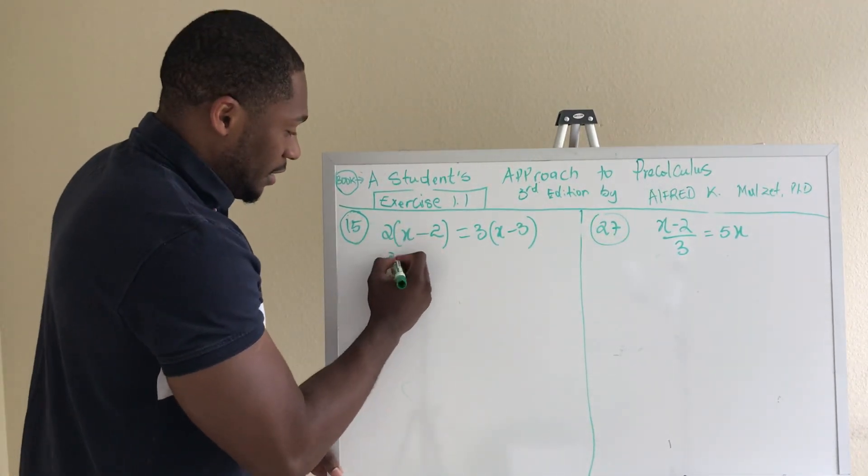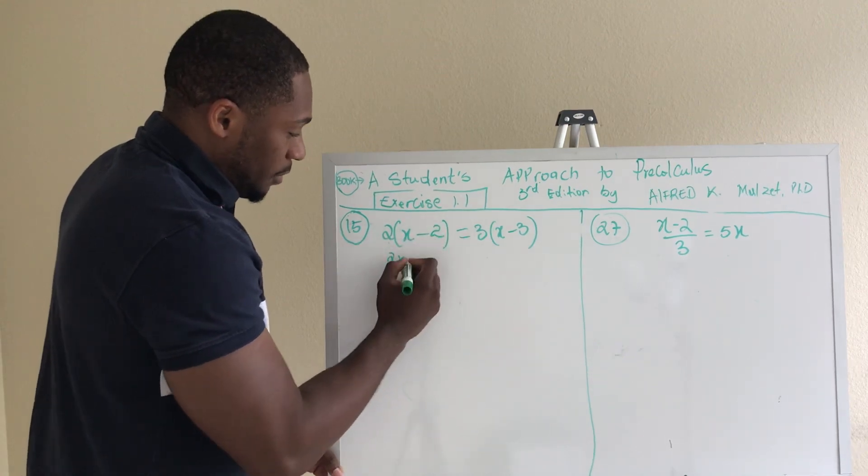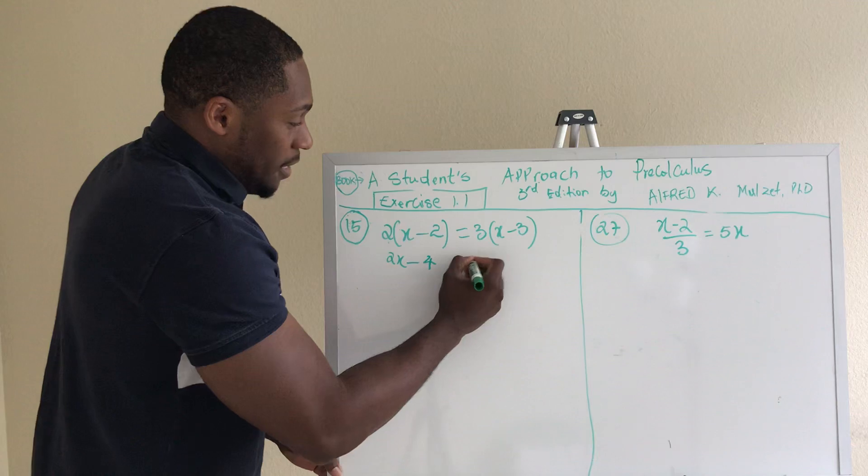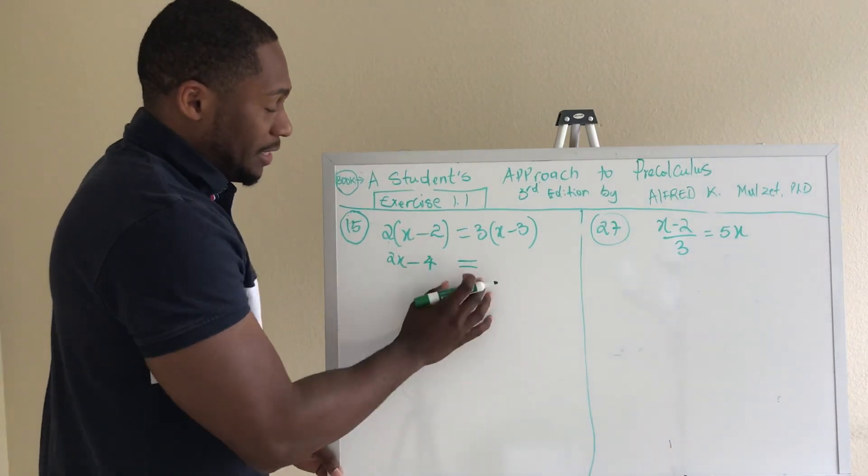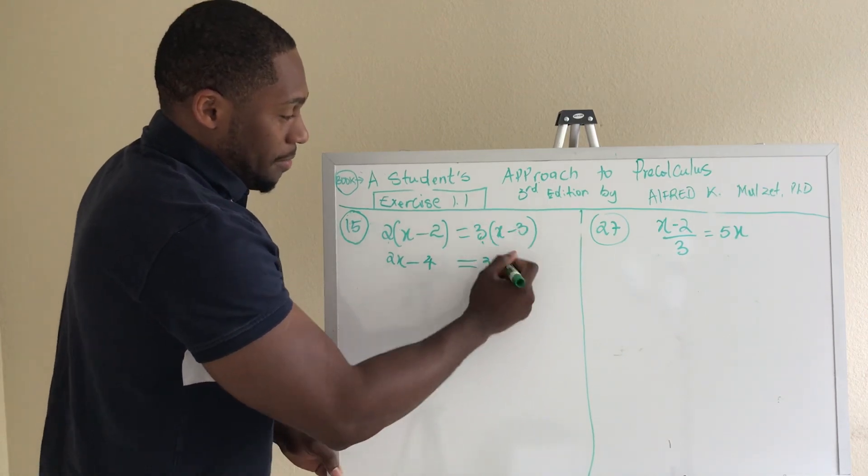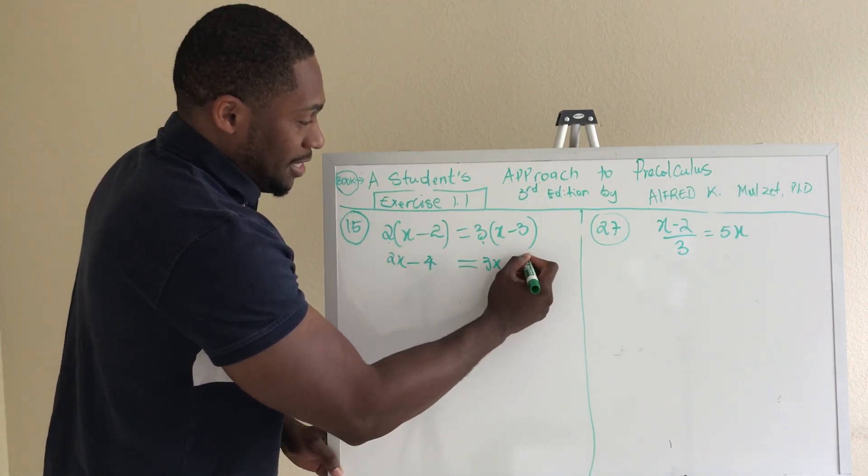We have two here, 2X, and then that same two times two minus, two times two is four, equals - you always want to put the sign - 3X. Three times three minus three times three, nine.